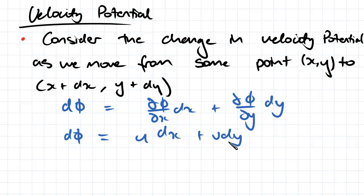And we can therefore rearrange that, considering that the change in the velocity potential is equal to zero along a constant velocity potential line.